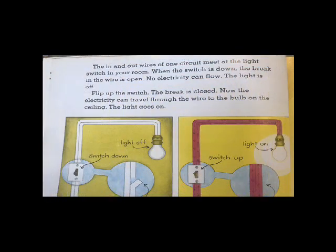The in and out wires of one circuit meet at the light switch in your room. When the switch is down, the break in the wire is open. No electricity can flow. The light is off. Flip up the switch. The break is closed. Now the electricity can travel through the wire to the bulb on the ceiling. The light goes on.